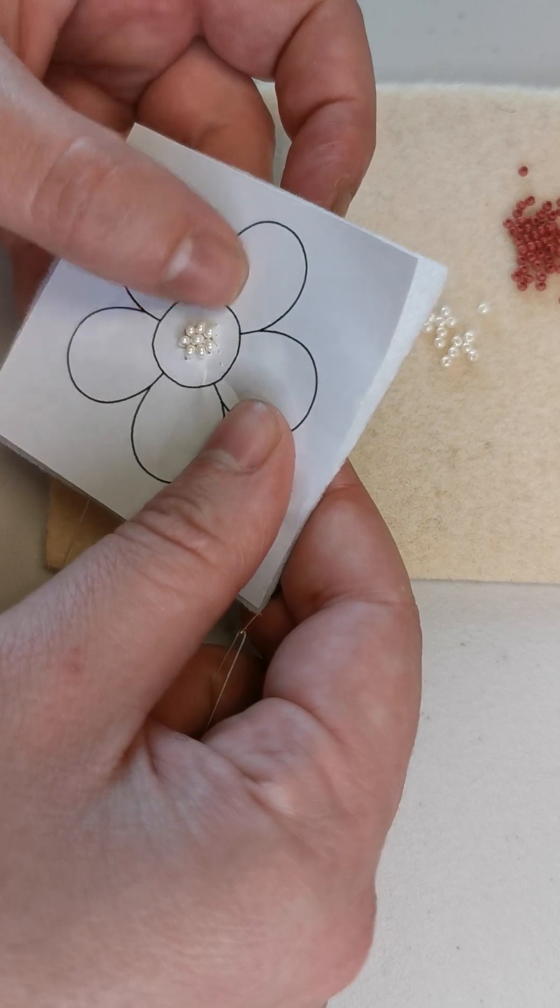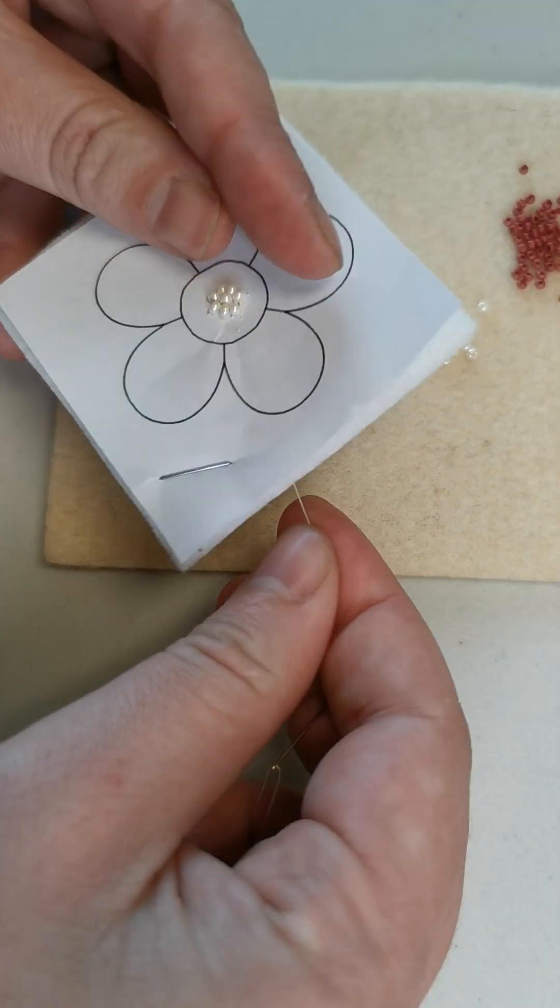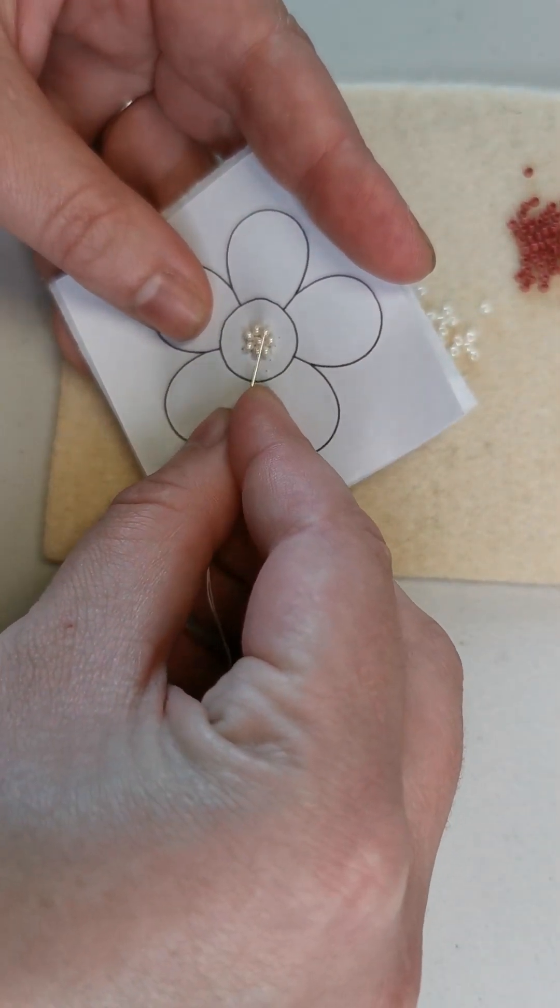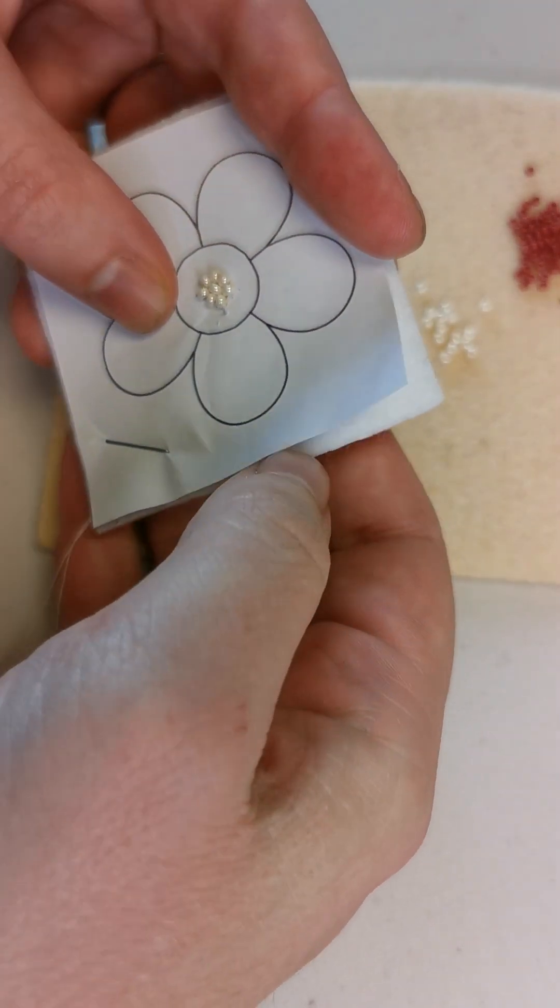Now those beads are all nice and secure. If you can't remember where you started, give the beads a poke and if they're not staying flat, then you know you've missed a spot and can go back. I've got the first two parts of the center done. Now I'm going to come up one bead's width away again.